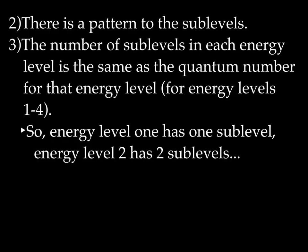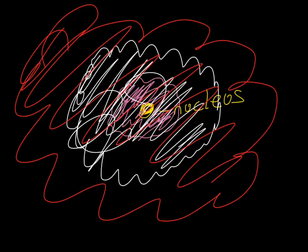Energy level one has one sublevel. Energy level two has two sublevels. Energy level three would then have three sublevels. Energy level four has four sublevels. And then energy levels five, six, and seven all have four sublevels. You can see that energy level one is smallest — that's why there's only one sublevel. Energy level two is larger; it can fit two. Energy level three can fit three, and so forth.